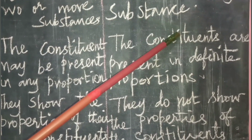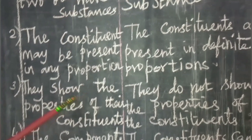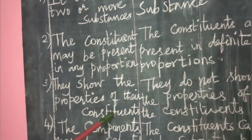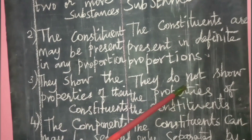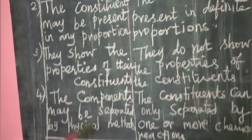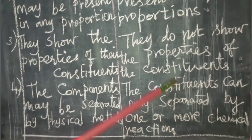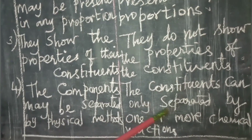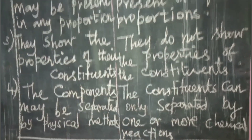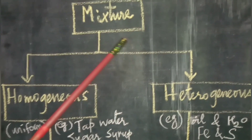The third difference: a mixture shows the properties of its individual constituents, whereas a compound does not show the properties of its constituents. The fourth difference: in a mixture, the components can be separated by physical methods, whereas in a compound, the constituents can only be separated by one or more chemical reactions.